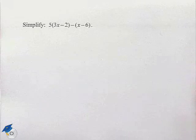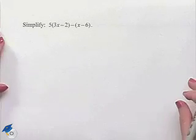Let's look at another algebraic expression in our example. Simplify 5 multiplied times 3x minus 2 minus x minus 6.